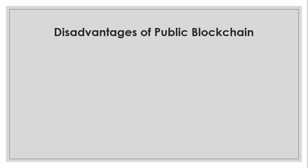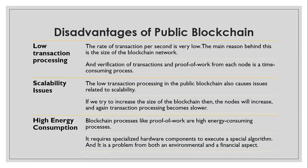A key disadvantage of public blockchain is low transaction processing speed. The rate of transactions per second is quite low because verification and proof of work from each node is time-consuming. Due to this, scalability is also a major issue — increasing the network size slows transactions further. A third disadvantage is high energy consumption, as most public blockchains use a proof-of-work consensus algorithm requiring specialized hardware, which is costly both environmentally and financially.